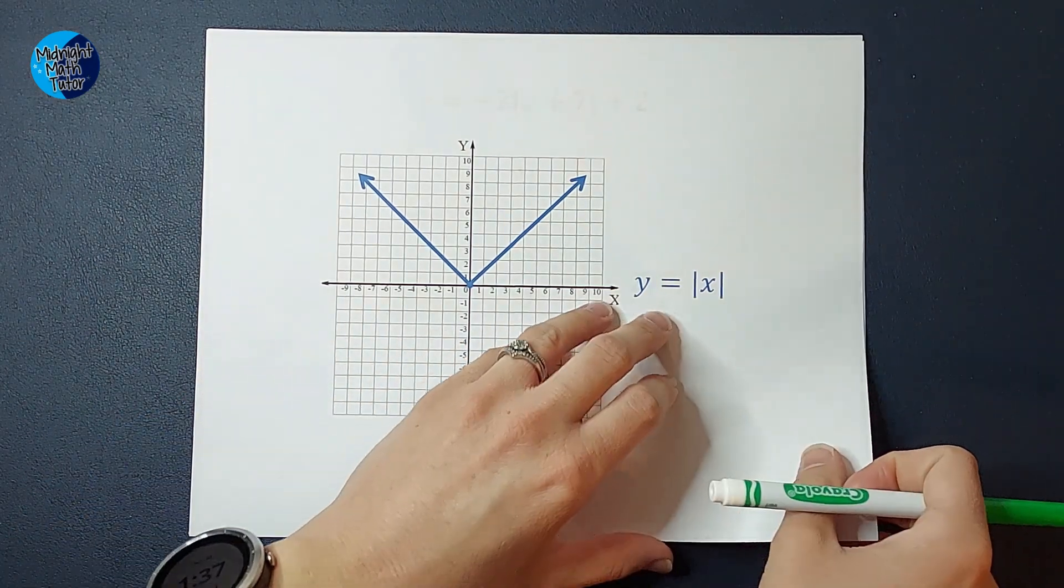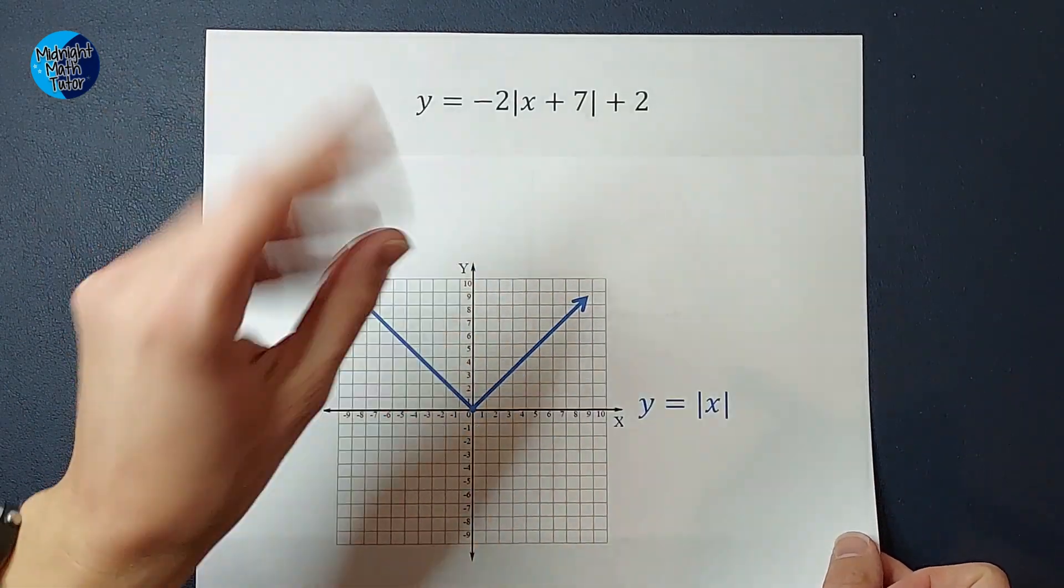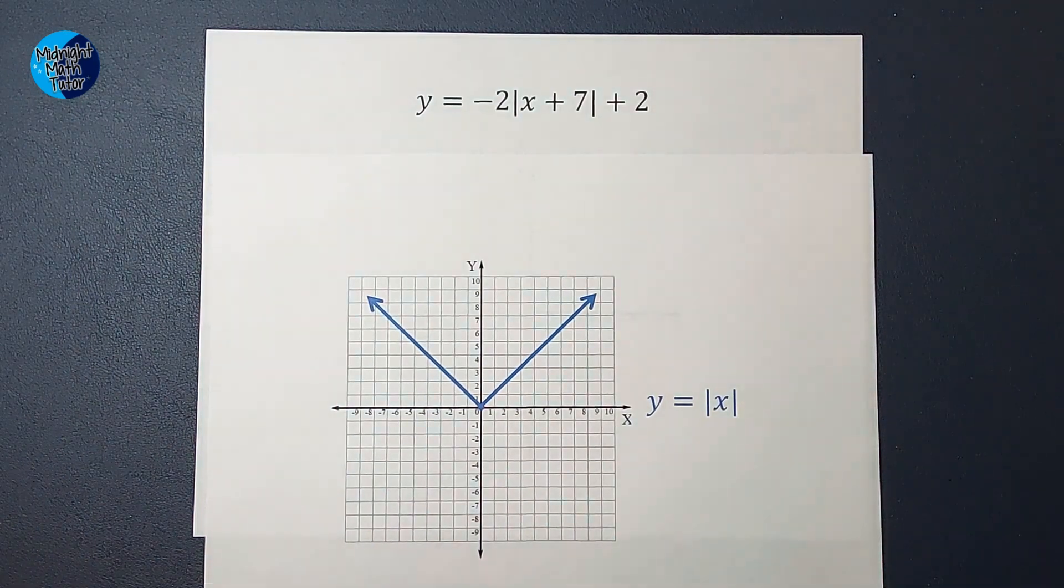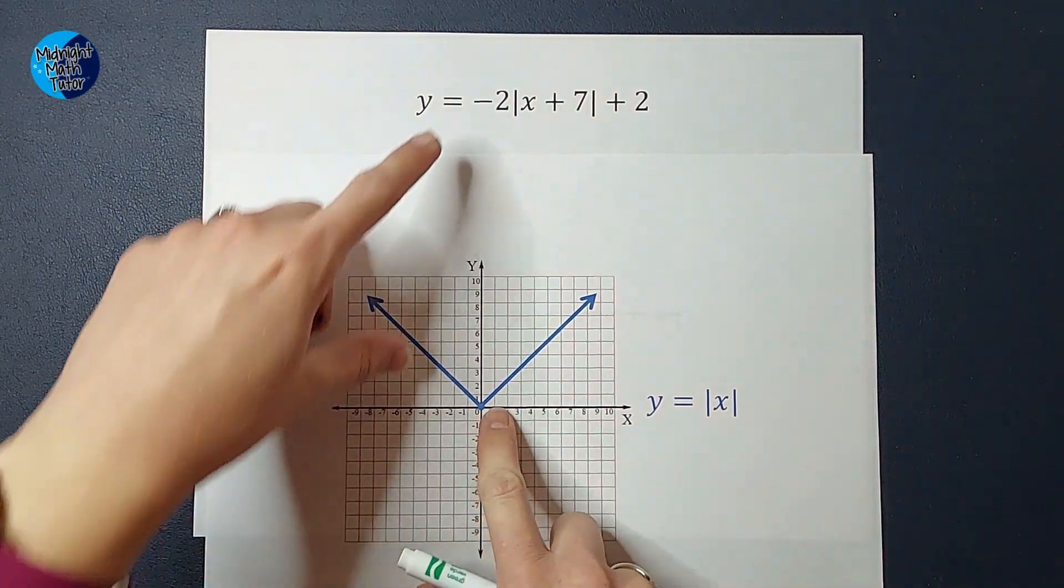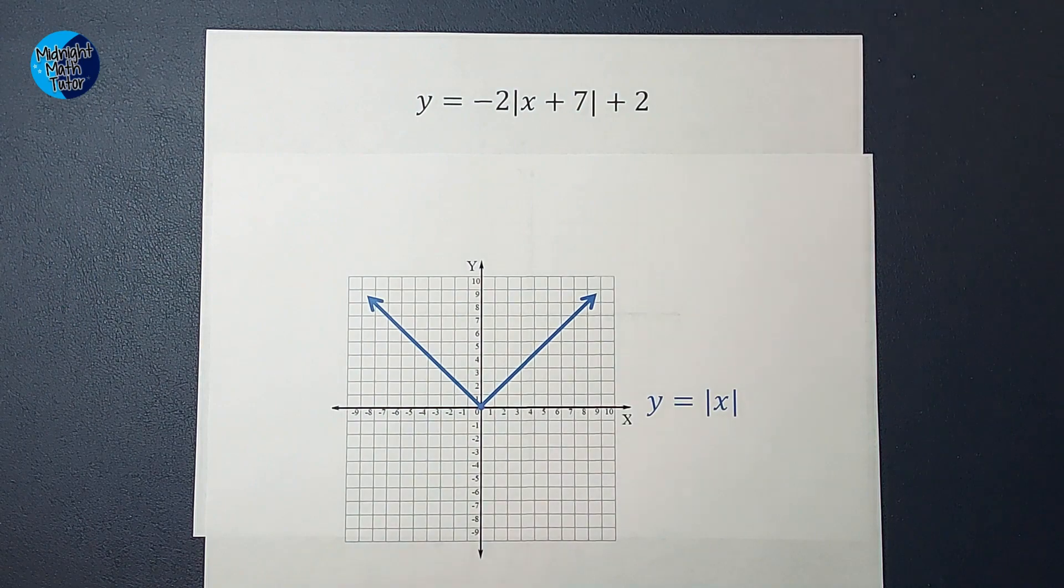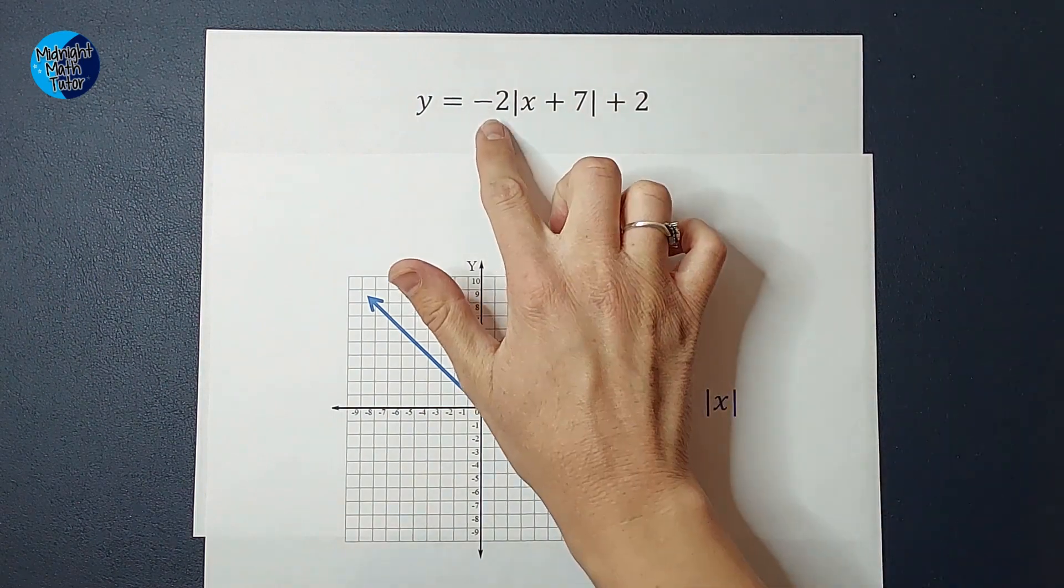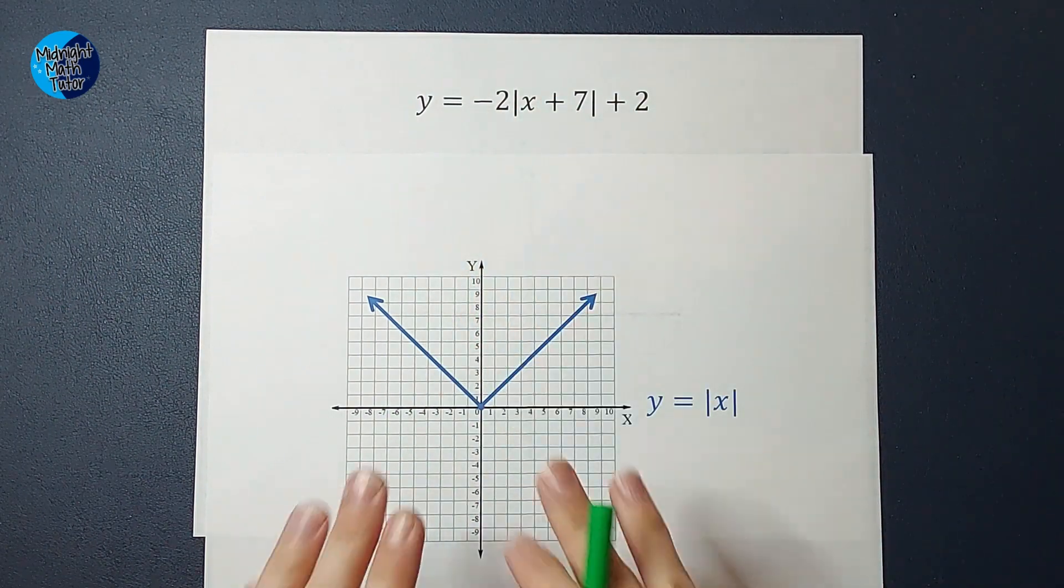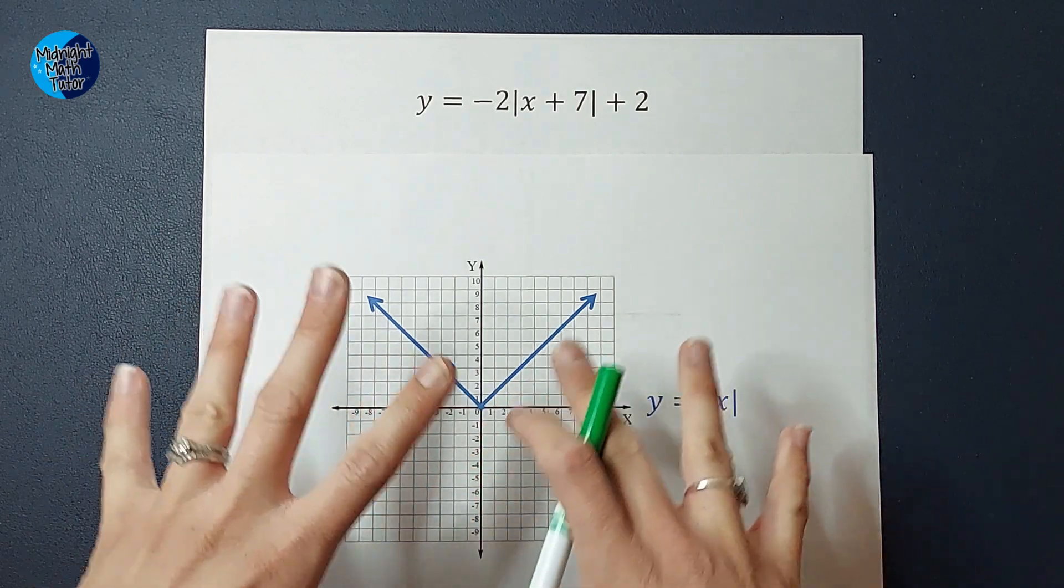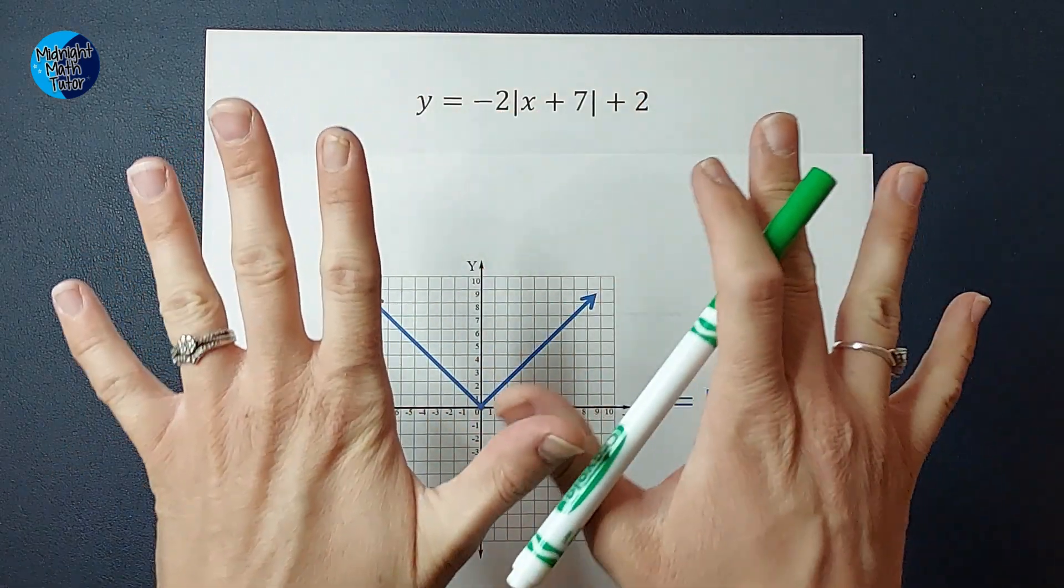But that's not what I'm being asked to graph. I'm being asked to graph something a little more complex. What we know is these two graphs are related to each other, and these numbers are going to tell me how to move this parent graph around to get this graph.